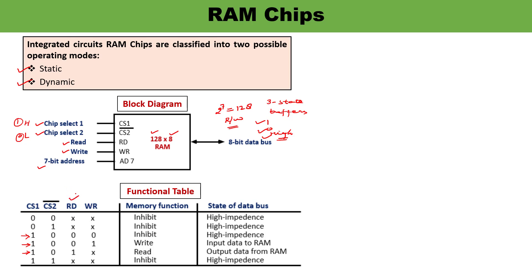Read is active high and write is also active high. When the read line is 1, a read operation will be performed. When write is 1 and read is 0 — meaning write is active high and read is active low — a write operation will be performed. Write means inputting data into RAM, and read means reading or taking data out from memory. When both read and write are active low, none of the operations will be performed — it will be an inhibit state.